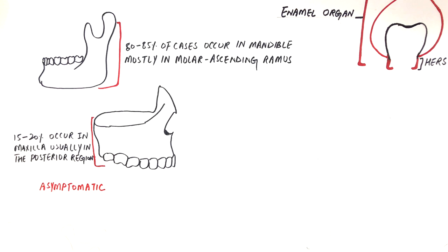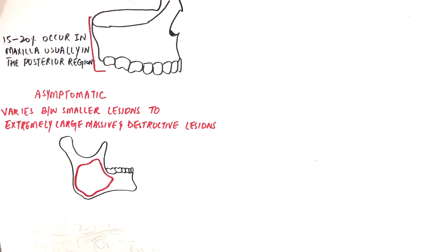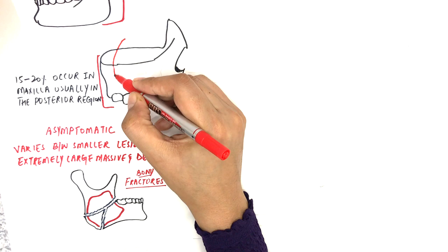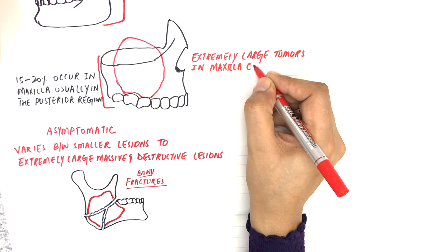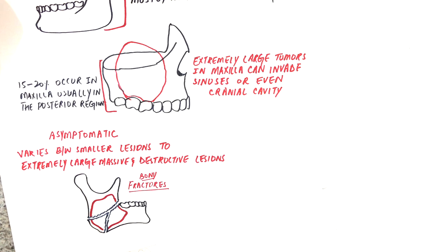Ameloblastomas are often asymptomatic and vary between smaller lesions with no obvious bony expansion to painless, massive, and destructive lesions of the jaws. Larger ameloblastomas can cause thinning of the cortical plates of the mandible, resulting in fluctuation or even bony fractures in the affected area. Tumors in the maxilla often have a tendency to invade into the maxillary sinus or the nasal floor, and when extremely large, may even invade into the cranial cavity, orbital cavity, or ethmoidal sinuses.